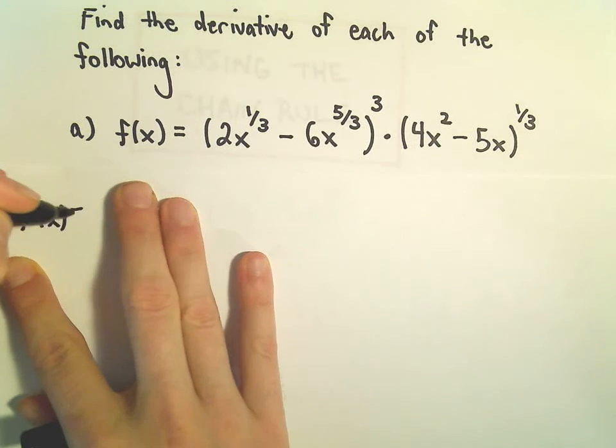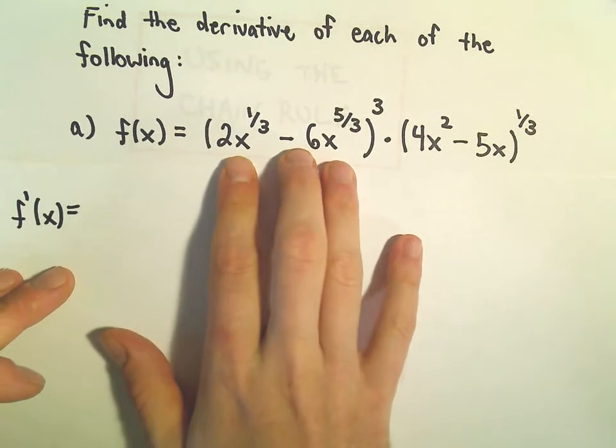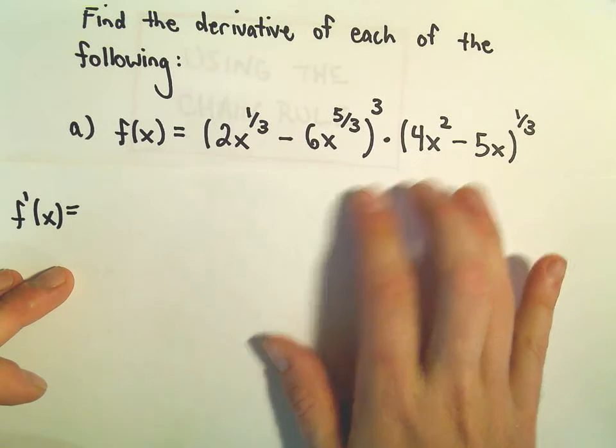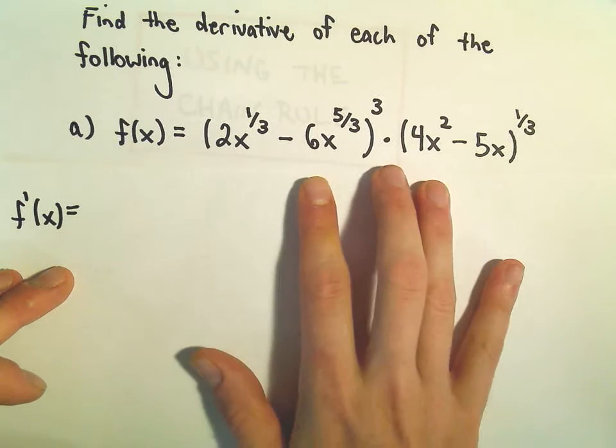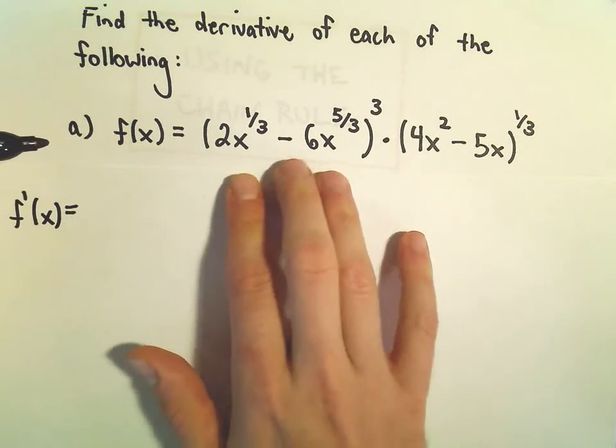I think this one will get a little long, so I'll try to squeeze it all in this line, but I don't know if I'll be able to. So we've got to take the derivative of one part, leave the other alone, put a plus sign, and then switch that out. So I'm going to take the derivative of the first factor.